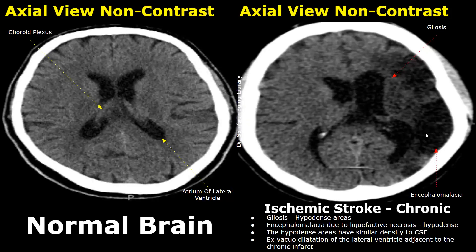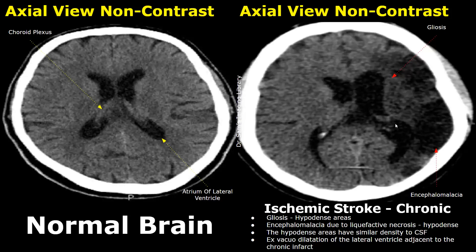These are the areas of encephalomalacia. The density of these areas will be similar to the density of cerebrospinal fluid that is seen within the lateral ventricles. Another feature is ex-vacuo dilatation of the lateral ventricle adjacent to the chronic infarct. We can see the lateral ventricle is dilated as compared to the lateral ventricle on the other side. This is a compensatory mechanism done to preserve brain function and is often seen in cases of chronic ischemic stroke.